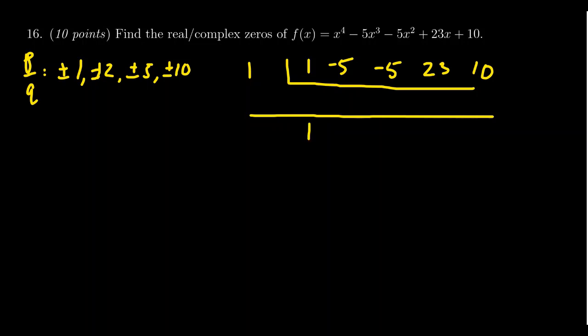Bring down the one. One times one is one. Minus five is negative four. Times one is negative four. Minus five is negative nine. Times one is negative nine. Plus 23 is 14. Times one is 14. Plus 10 is 24. So we see that this is not equal to zero. So one is, in fact, not a root.